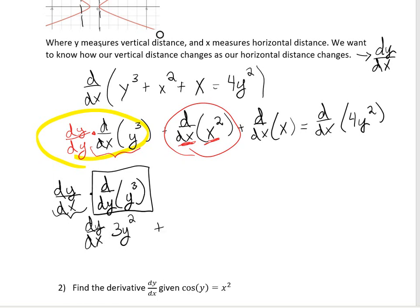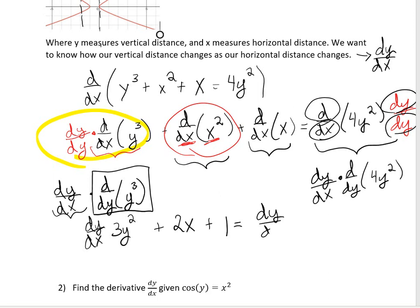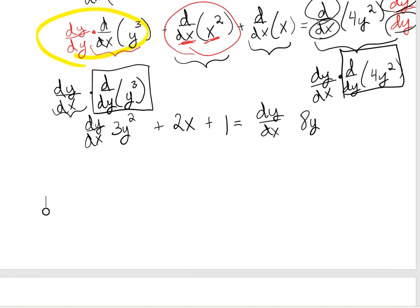So we get 3y² times dy/dx, plus the derivative of x² which is 2x, plus the derivative of x which is 1. On the right-hand side, I do the same thing — multiply by dy/dy — so I get dy/dx times d/dy of 4y², which gives dy/dx times 8y.